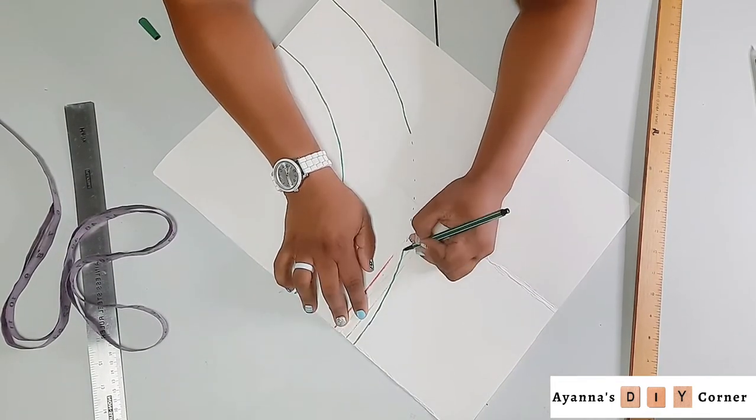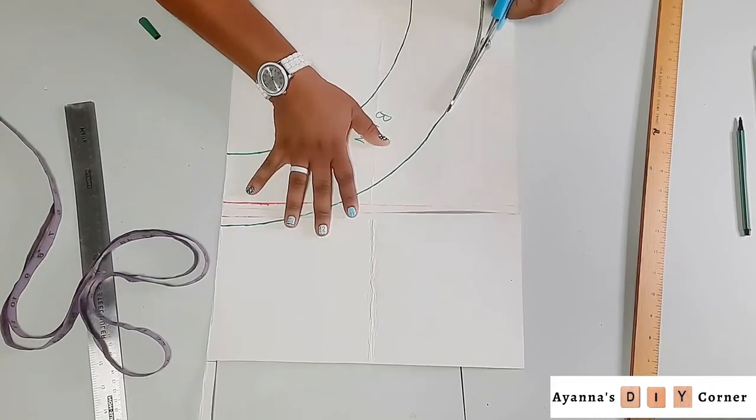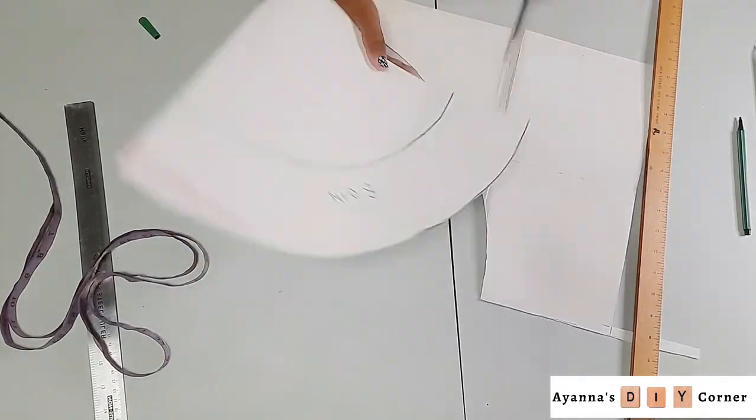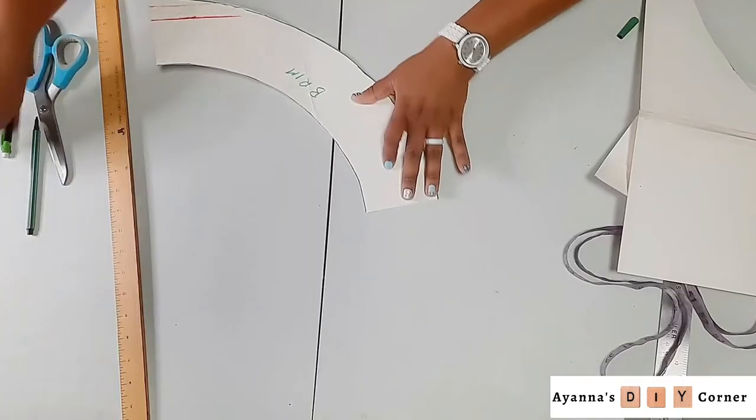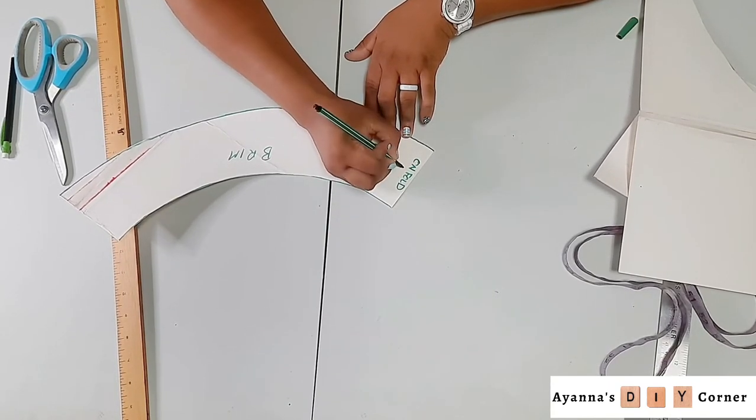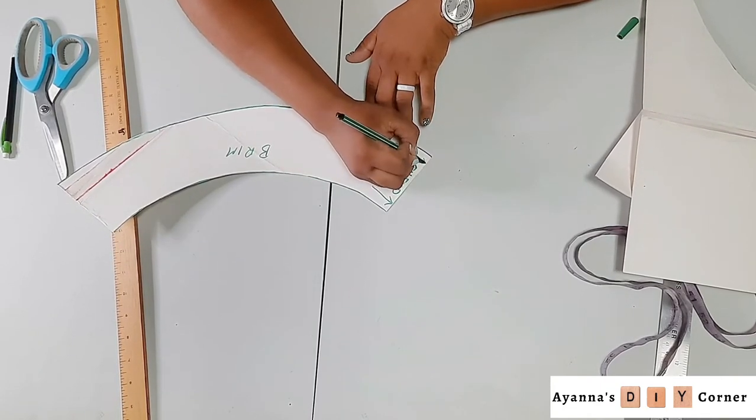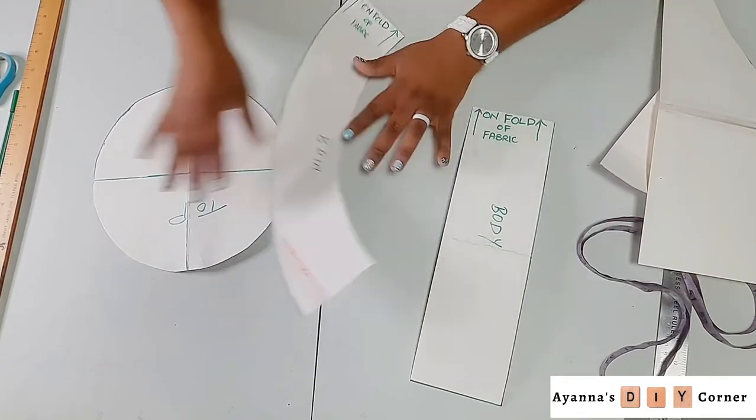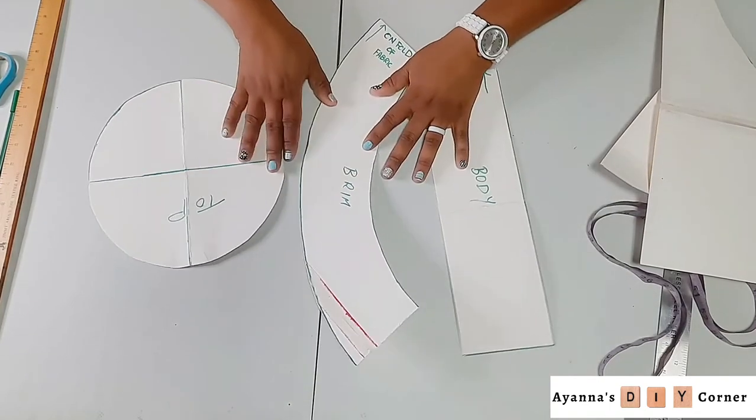Once you have your brim pattern piece, simply cut that out. Take one of the sides and mark it to place on the fold of fabric. Draw your arrows so you know this is the end to place on the fold when you need to cut it out. And that's it—you have all three pieces for your bucket hat pattern.